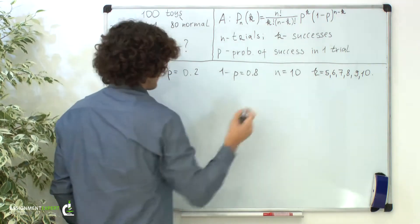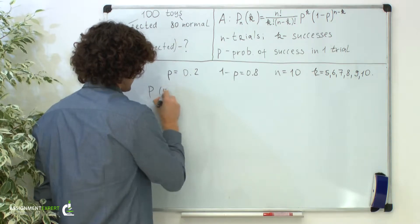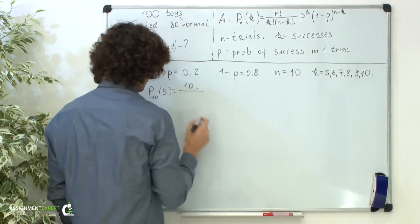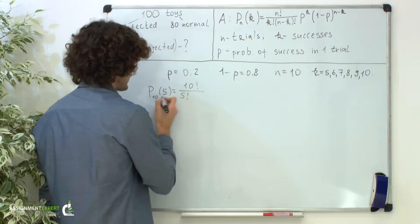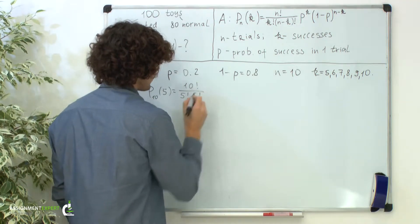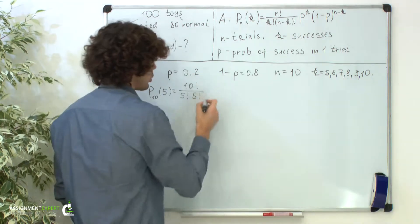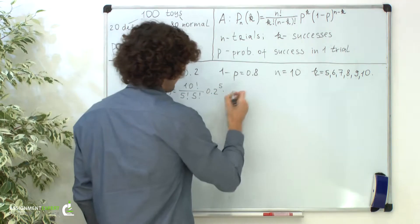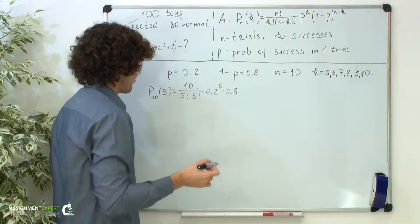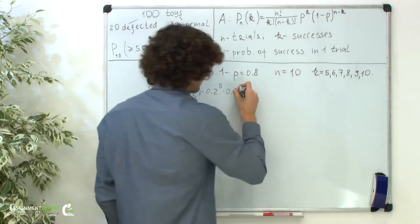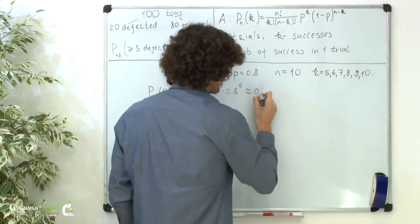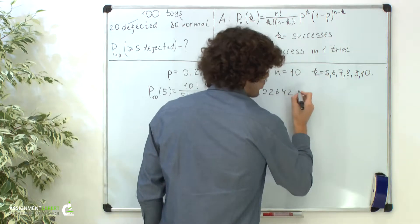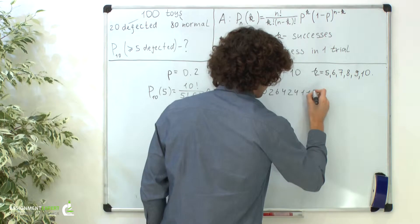First, for the case when k is 5: the probability of 5 successes out of 10 trials equals 10 factorial over 5 factorial times (10 minus 5), which is also 5 factorial, times the probability of success 0.2 raised to the power of 5, times the probability of failure 0.8 raised to the power of 10 minus 5, which is also 5. This gives us approximately 0.0264241152.